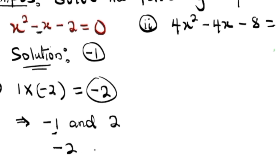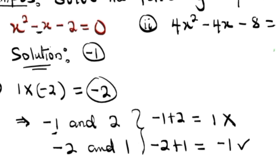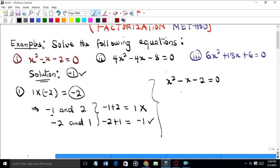Also, -2 times 1 is -2. But -1 plus 2 equals 1, and that is not the coefficient of x — the coefficient of x is -1. Now -2 plus 1 gives -1. Beautiful, so this is the right choice.